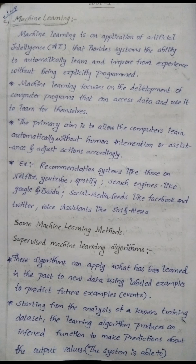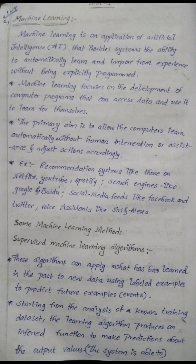In supervised learning, you start with a bunch of labeled data — for example, a group of cat images labeled as 'cat'. You provide input such as a cat image or a dog image, then compare, process, model, evaluate, and get an output. For example, a dog image is labeled 'not matched' with cat, and a cat image is matched and labeled accordingly.